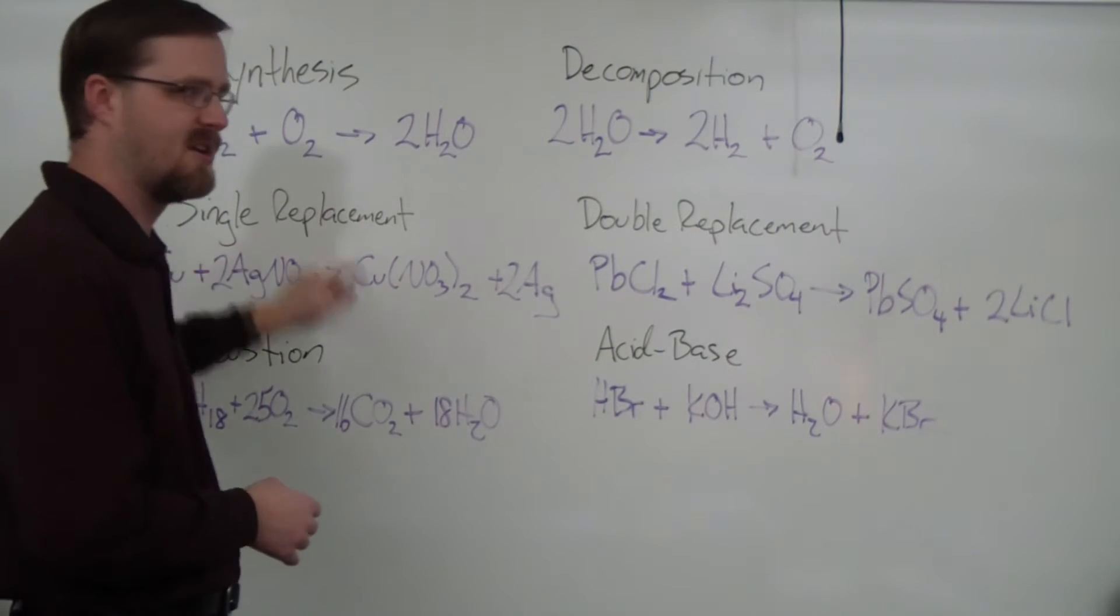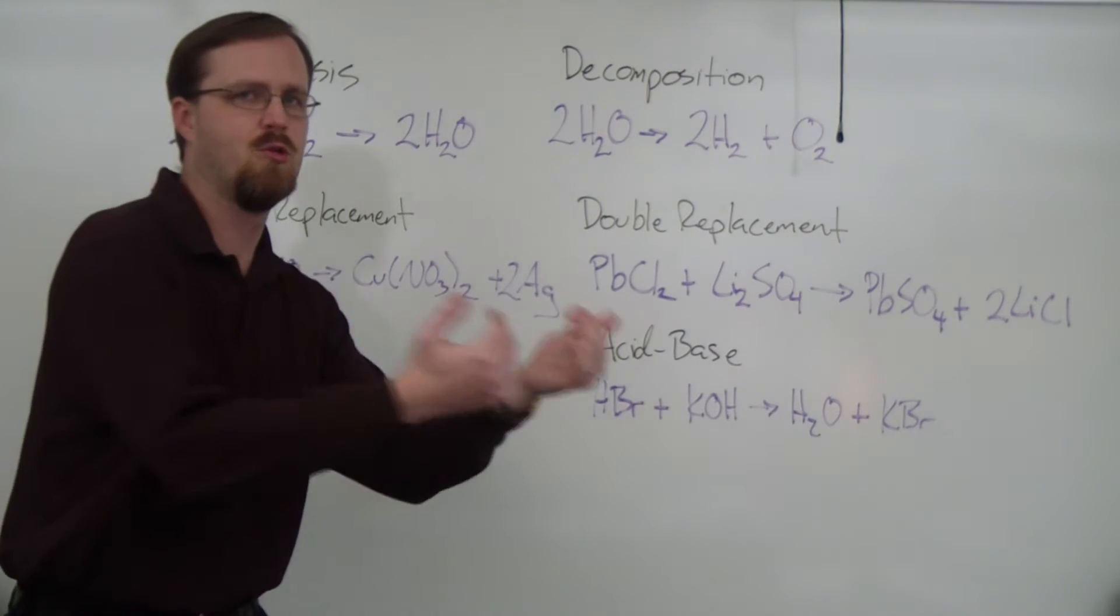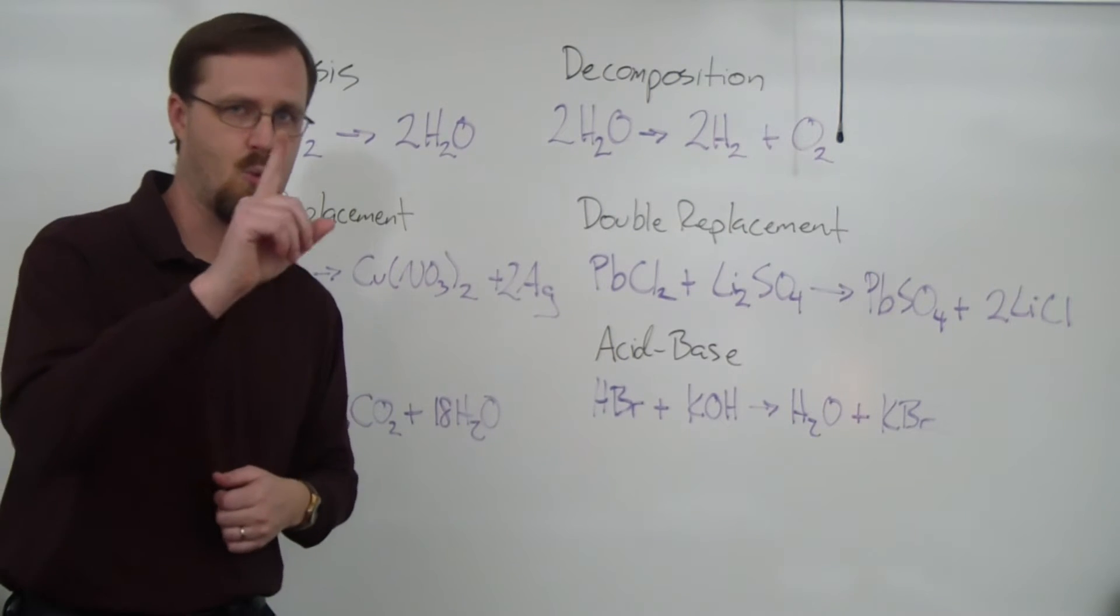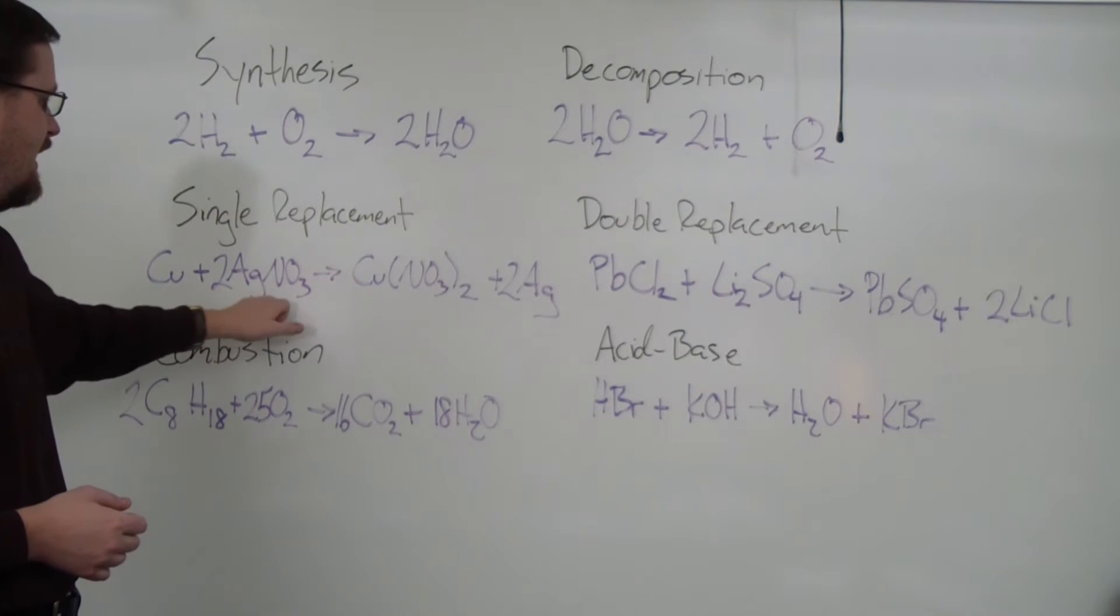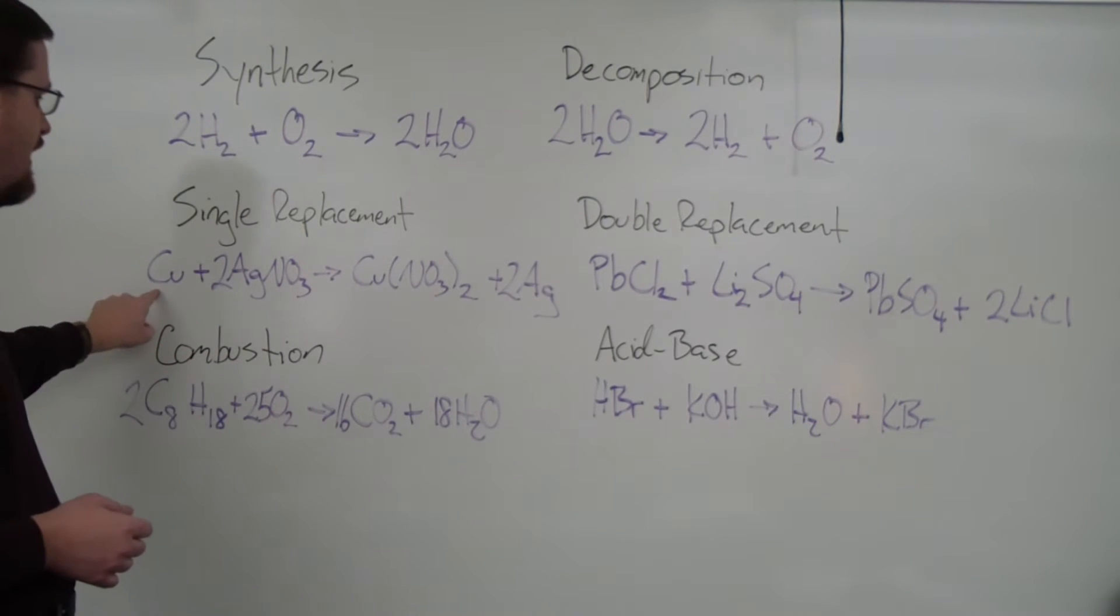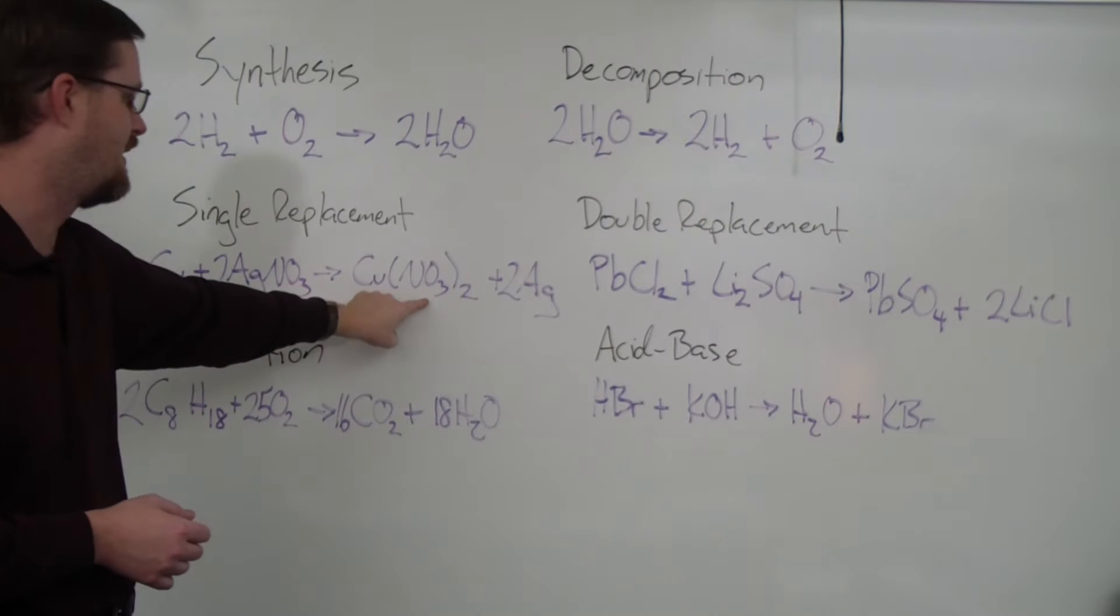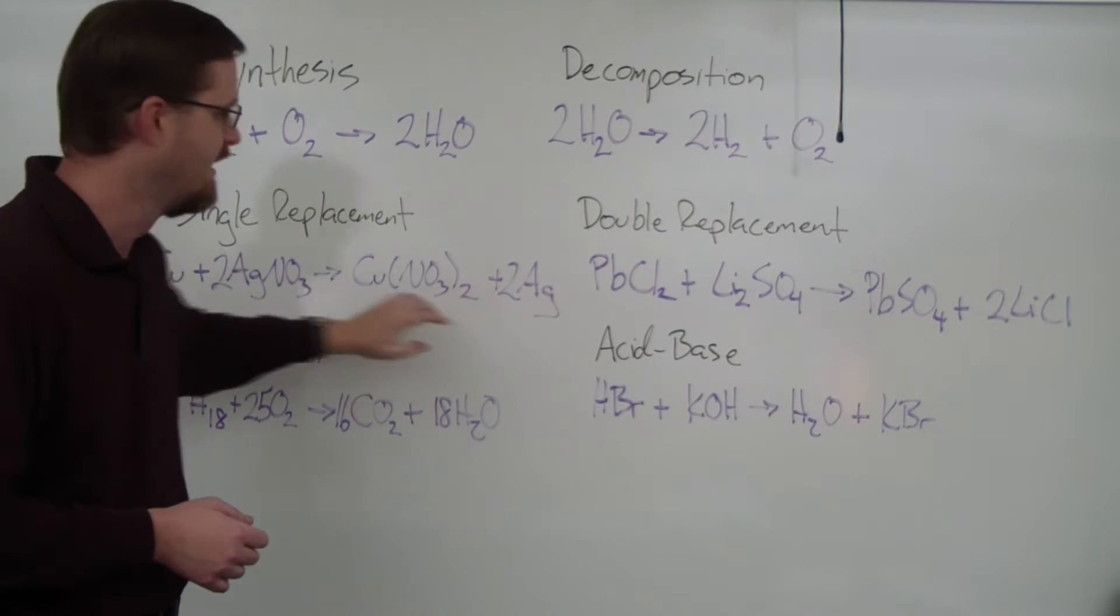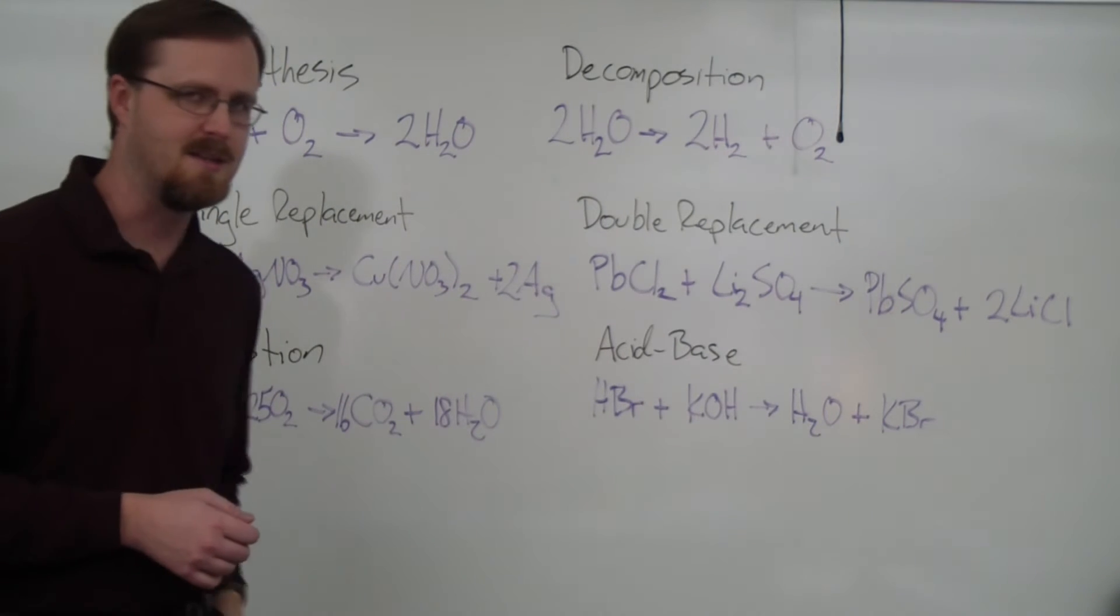The next category is called single replacement. Just think about the name, single replacement. Something is being replaced and it is only one thing that is being replaced. Let's take a look at our example here. We have copper and silver nitrate. And if you'll notice on the product side, the copper has now taken the place of silver and copper is now bonded to the nitrate and the silver has been kicked out and it's all by itself. That is a single replacement. In this case, the copper replaced the silver.